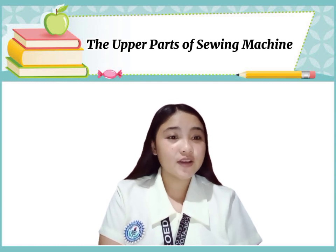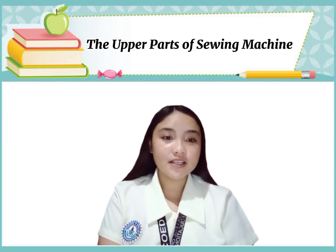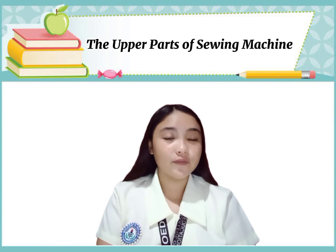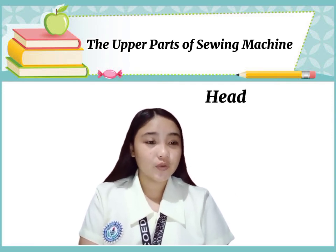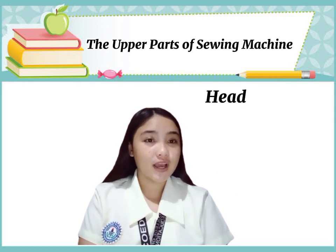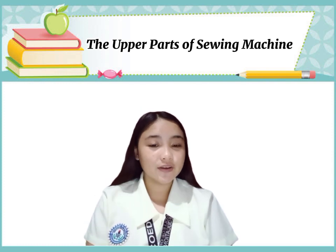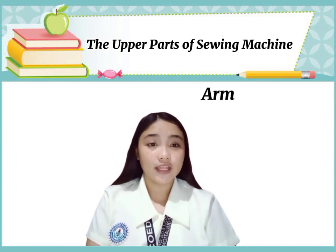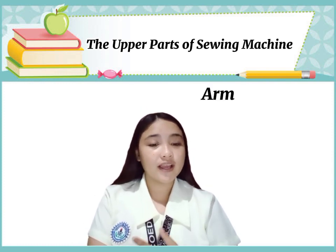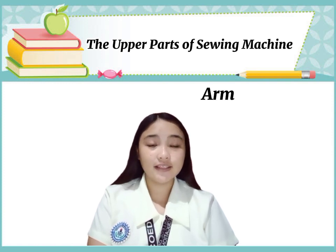The upper parts of the sewing machine and their function. The upper parts are composed of: first, head. Head is the complete sewing machine without cabinet or stand. Second, arm. Arm is the curved part of the head containing the mechanism for operating the needle.